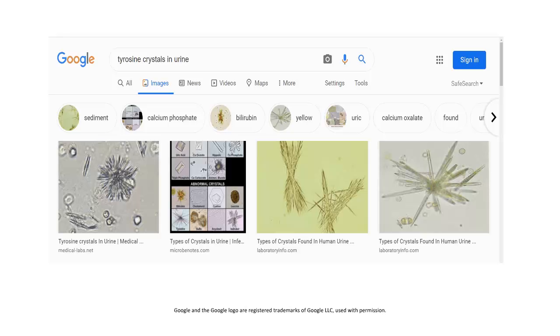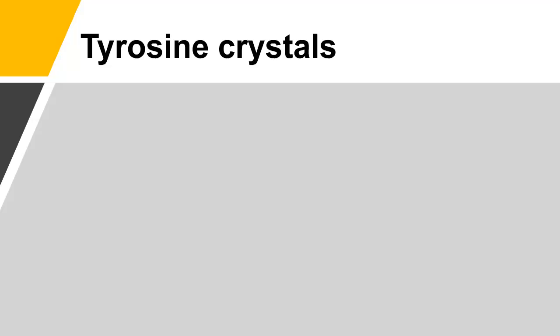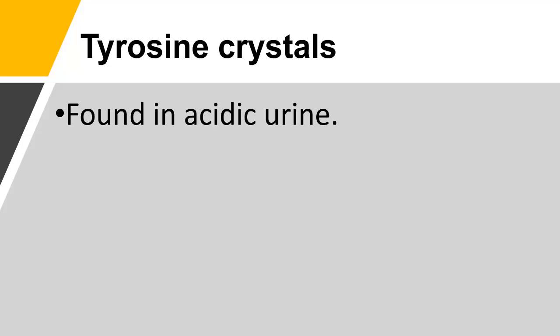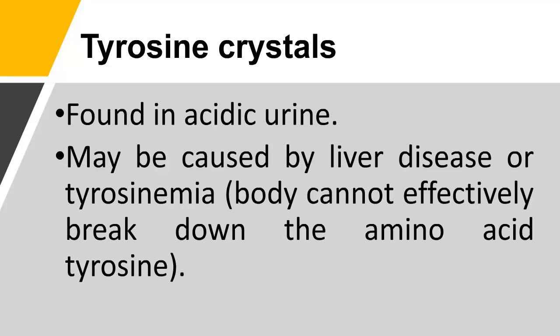Tyrosine crystals in urine are found in acidic urine and may be caused by liver disease or tyrosinemia, a condition where the body cannot effectively break down the amino acid tyrosine.